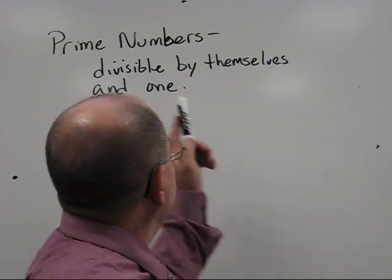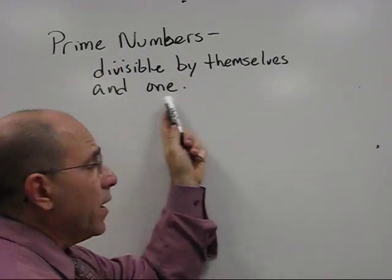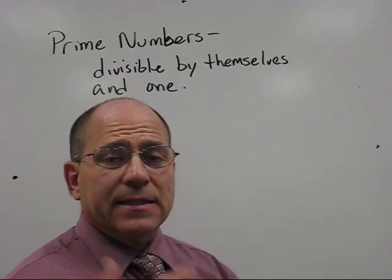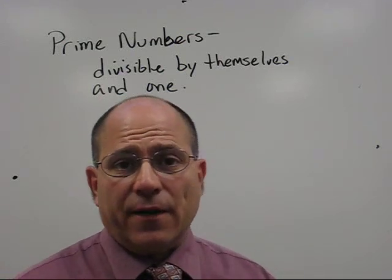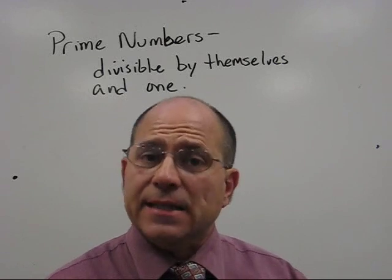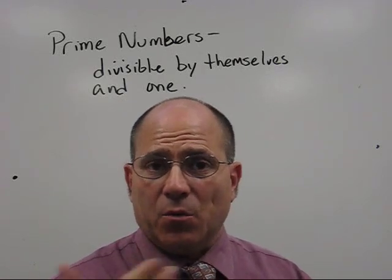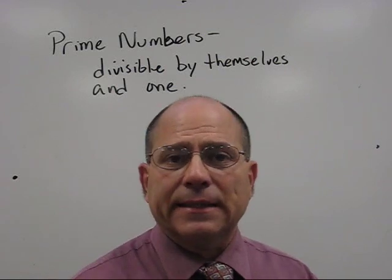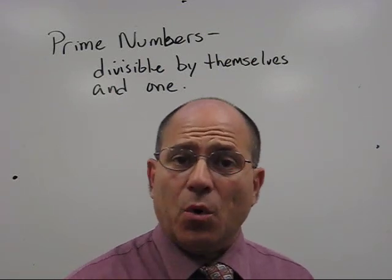Prime numbers are the numbers that are divisible by themselves and one only. An example would be the number five. Nothing will divide into five except five or one. Seven is a prime number also. Nothing divides into seven except seven and one. Bigger prime numbers, 19. Nothing divides into 19 except 19 or one.